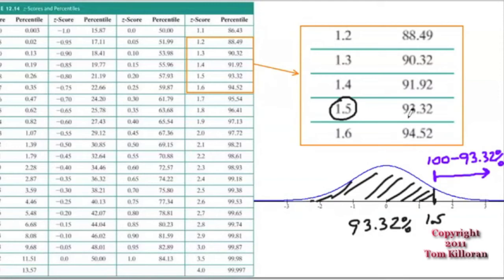So if you're going to the left, you just take the number off the table. If you're going to the right, you have to subtract the number from the table from 100.